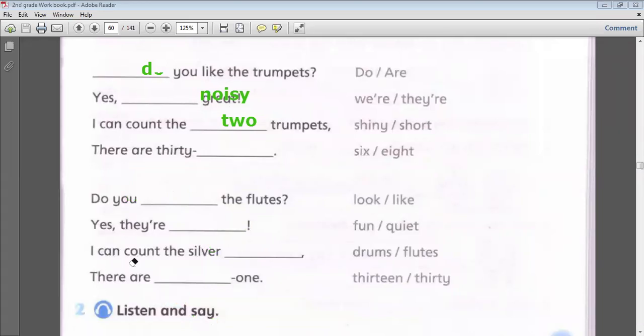I can count the silver... I can count the silver what? Drums or flutes? The drums are not silver. The flutes are silver. So here we have to write 'flutes'.